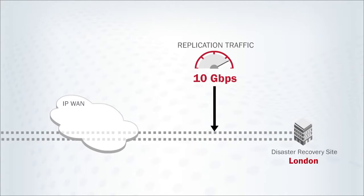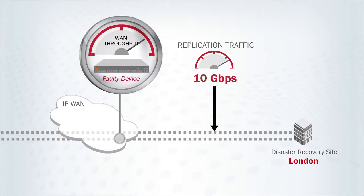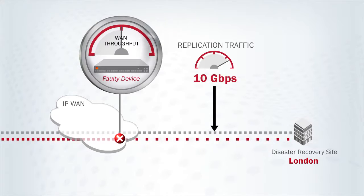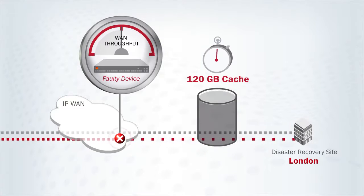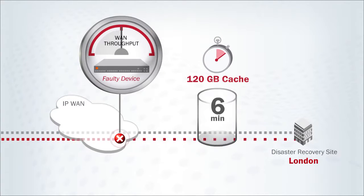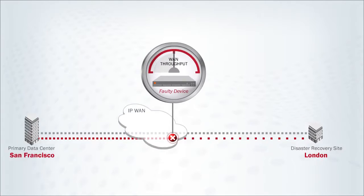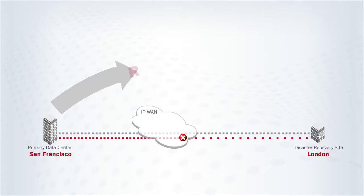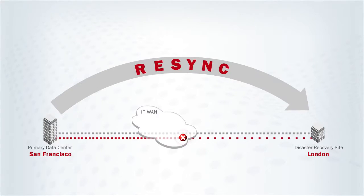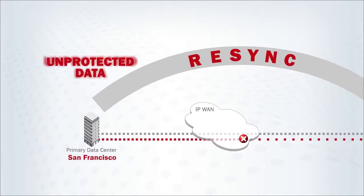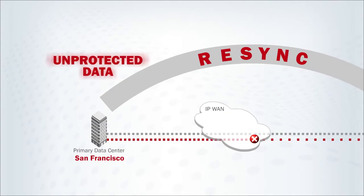Imagine an array replicating at 10 gigabits per second. If WAN throughput drops by 50%, the array cache can max out its buffer in as little as 6 minutes, creating exposure and liability, and possibly forcing a re-sync — during which data is unprotected.